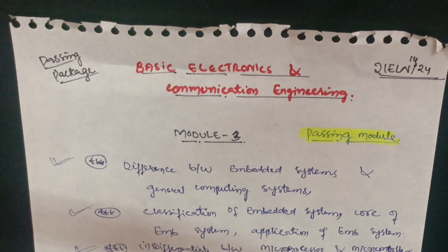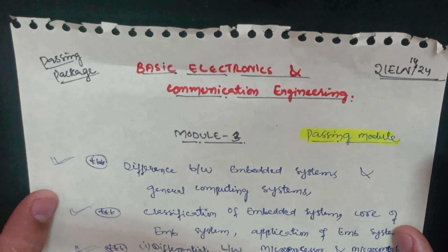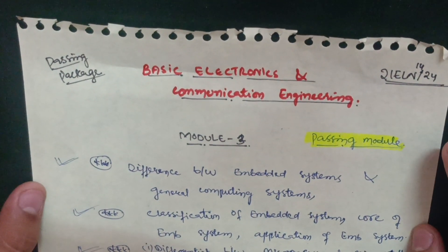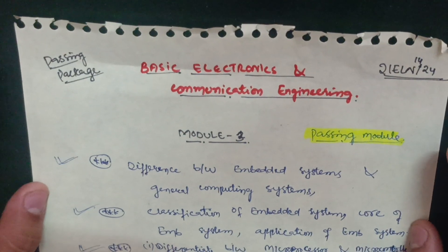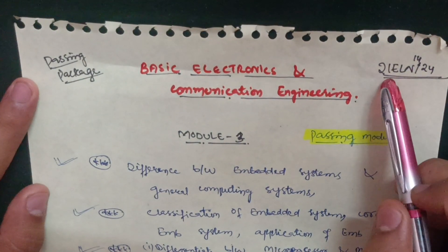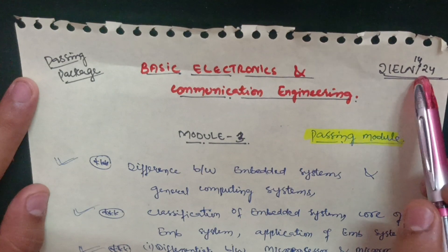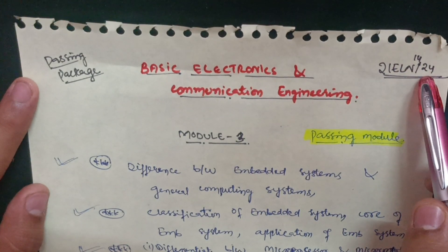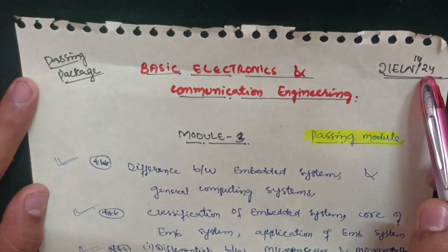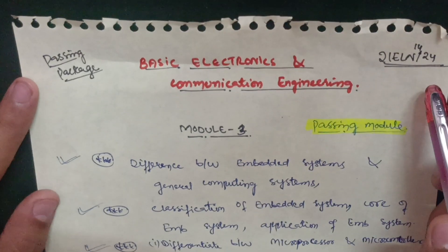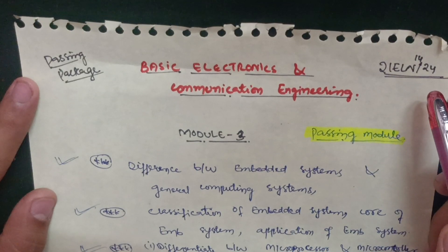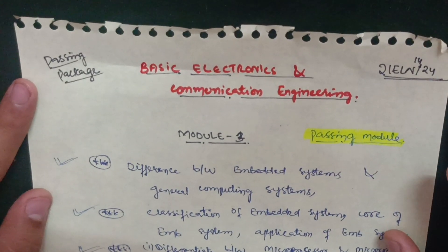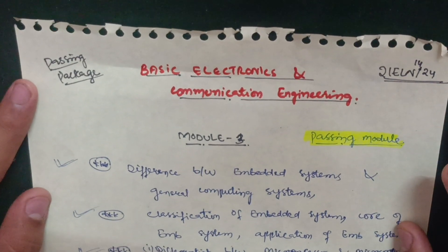Hello everyone, welcome back to my channel. Today I am covering another subject: Basic Electronics and Communication Engineering for the 2021 scheme students. Its subject code is 21ELN14 or 24 — the fourth subject in first semester and fourth subject in second semester. If you have a backlog in this subject, fear not — you are coming to the right platform. I will provide a passing package for this subject, which is considered the toughest in first and second semester engineering.